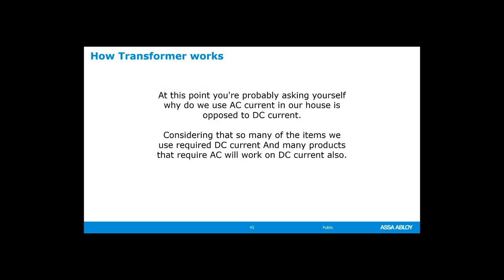You're probably asking yourself, why do we use AC current in our house as opposed to DC current? Considering that so many items in your house require DC current — such as computers — you plug them into your house but all of them have adapters to convert it to DC current. You have that with your computers, TVs, and most of your electronic equipment. I'm going to show you a video that explains the one feature that makes AC current so dominant and why we use AC current opposed to DC current traveling throughout the country, and it's going to explain how our transformer works.